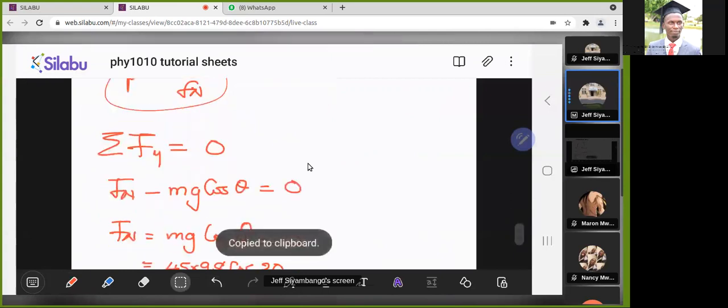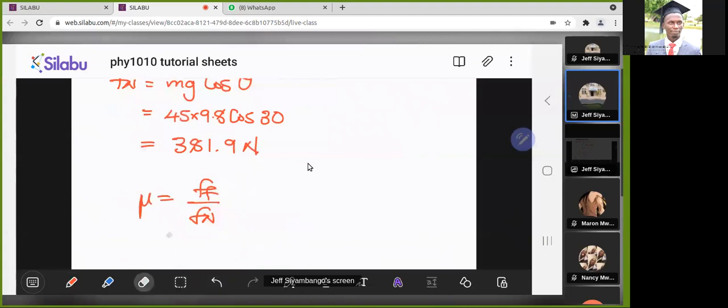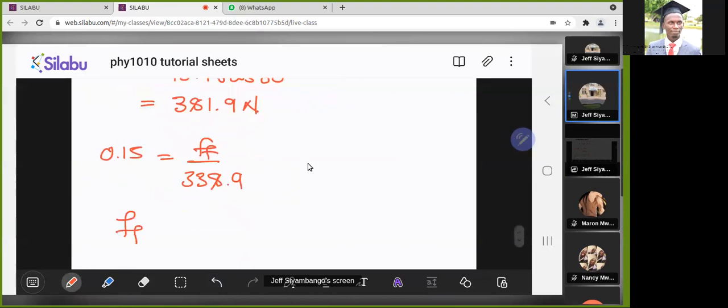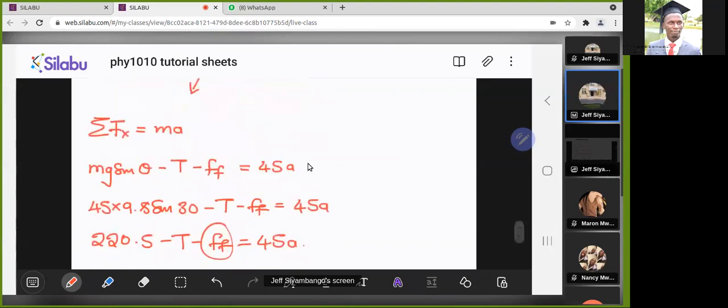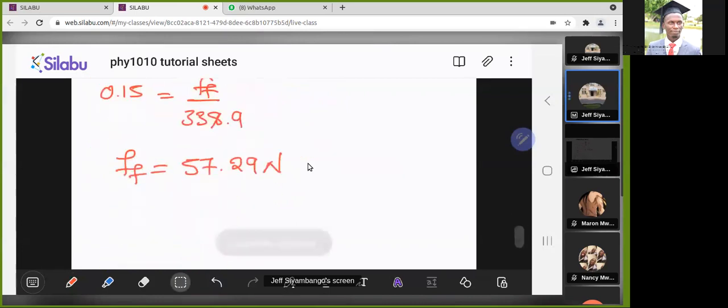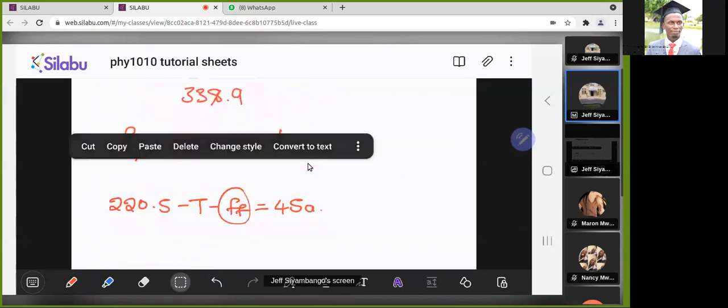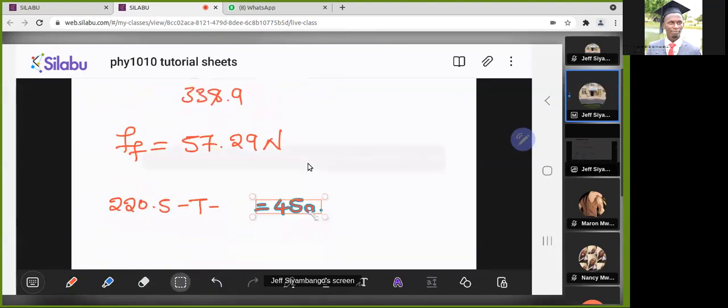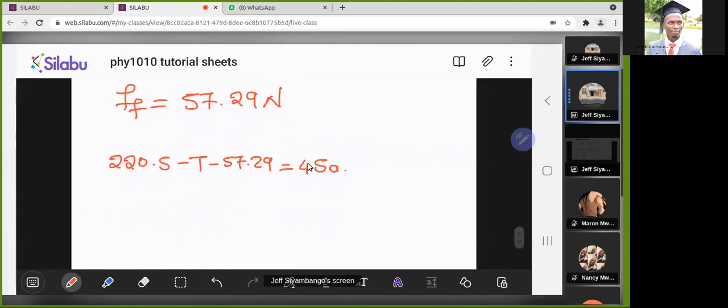We can now use the normal force and this expression to find what the frictional force would be. The coefficient was 0.15, and the normal we have just seen is 381.9. So that we can cross multiply to get the frictional force: 0.15 times 381.9. We get 57.29 newtons. And since we now know what the frictional force is, we can now bring it back to this expression and substitute it.